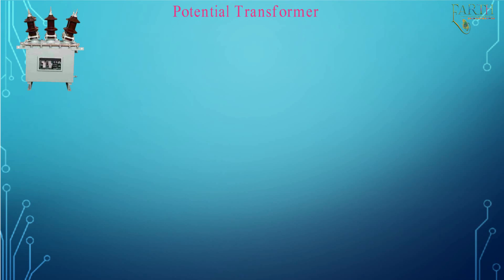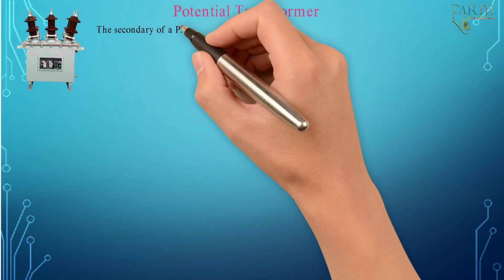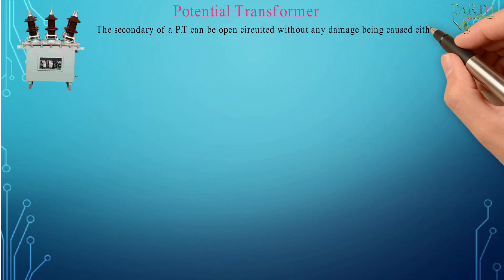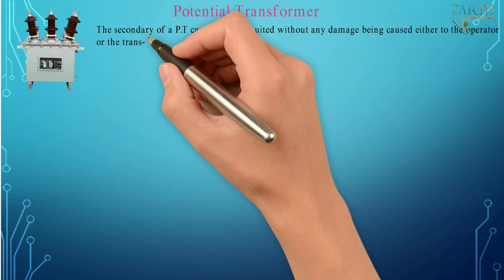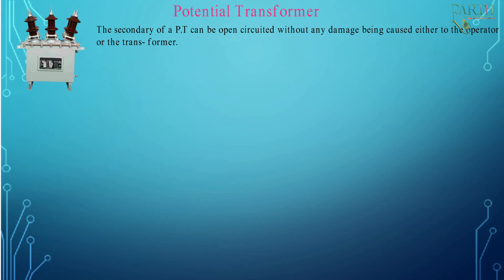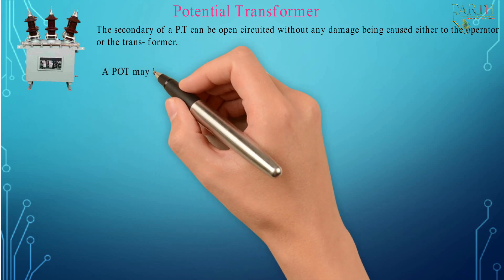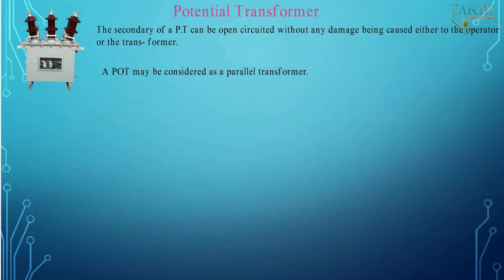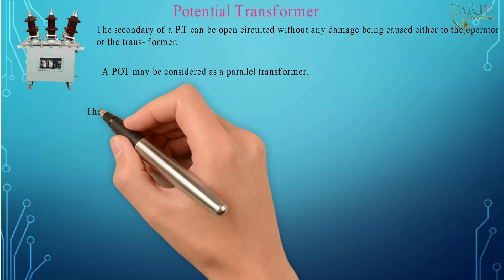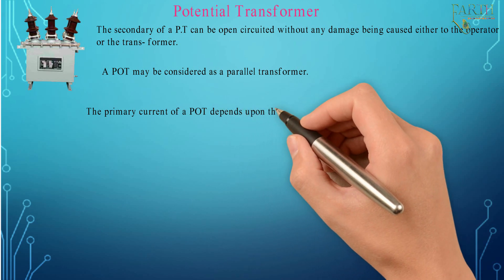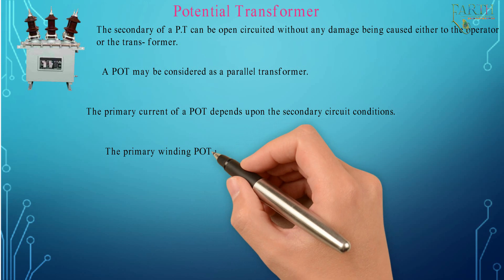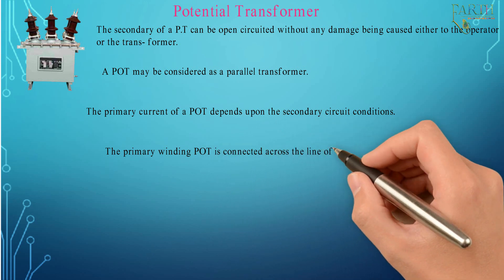Potential Transformer: The secondary of a PT can be open-circuited without any damage being caused either to the operator or the transformer. A PT may be considered as a parallel transformer. The primary winding of the PT is connected across the line of voltage to be measured.